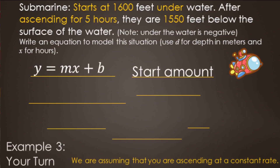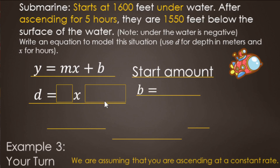The submarine is going up at a constant rate, starting at 1600 feet under the water and ascending for five hours. After five hours they are at 1550 feet below the surface. We know the start amount — the y-intercept — and we're going to find the rate or slope, so we use slope-intercept form. We use D for depth as the dependent variable and x for number of hours. The start is 1600 under the water, meaning negative, so b is negative 1600. We write minus 1600 rather than plus a negative.